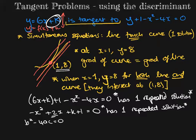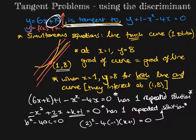And c is the everything else, which is k + 1. So b² - 4ac = 0 because there's one repeated solution, because it's a tangent. And then I can solve for k.